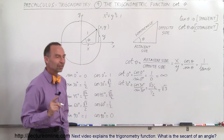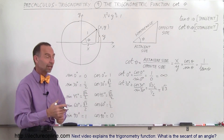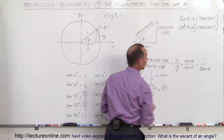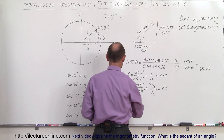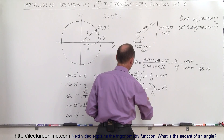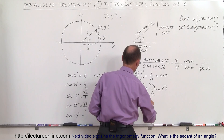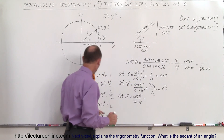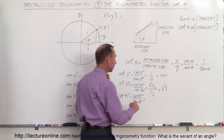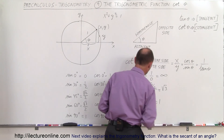You're beginning to see a pattern. If you remember the previous video where we talked about the tangent of theta, these numbers are exactly in reverse — the inverse — which is what you'd expect. The cotangent of 45 degrees is equal to the cosine of 45 degrees divided by the sine of 45 degrees. At 45 degrees, the sine and cosine are equal to each other, so that's the square root of 2 over 2 divided by the square root of 2 over 2, which equals 1.